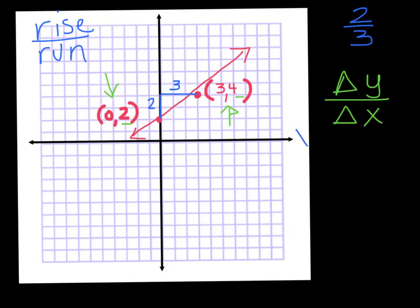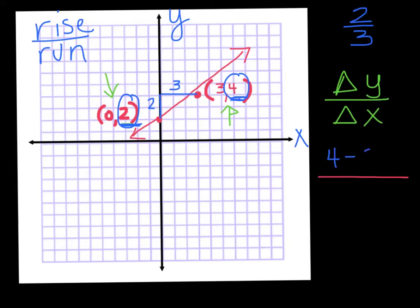First thing I'm going to do is label my X and Y axis. You want to look at the two Y coordinates — here's my two Y coordinates, a 2 and a 4. What did they change by? How much did I go up? From 2 to 4 it changed by 2. To find the change, you're finding the difference — how much space is between those two points. It doesn't matter which coordinate you start with; you're going to subtract. So I'm going to take 4 take away 2.